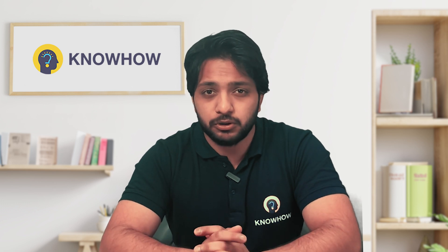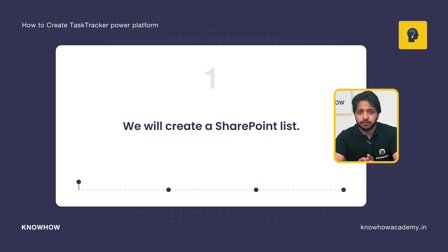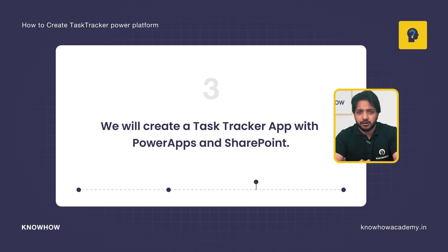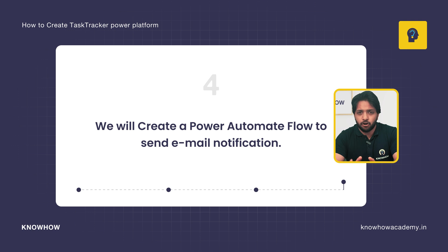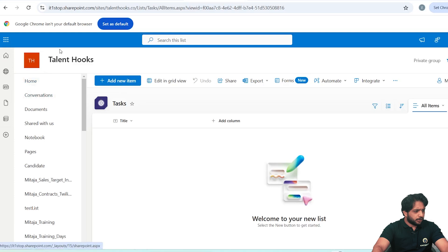Before moving further, let me tell you what you are going to learn in this video. We will first create a list in SharePoint, then integrate our list in a Power Apps canvas application, and we will create a task tracker application with Power Apps and SharePoint. Additionally, with Power Automate we will create a flow to send email notifications in our application.